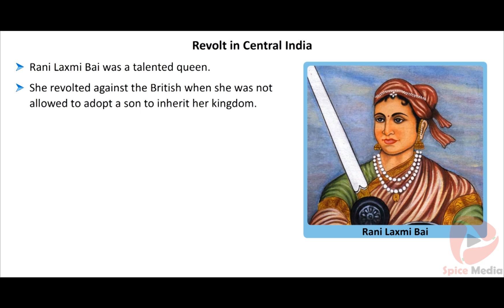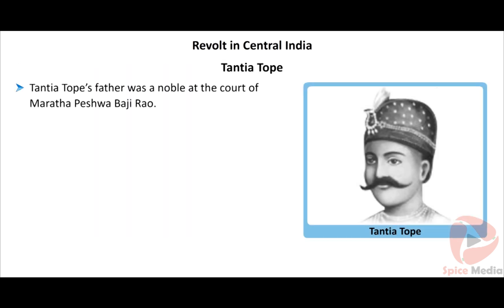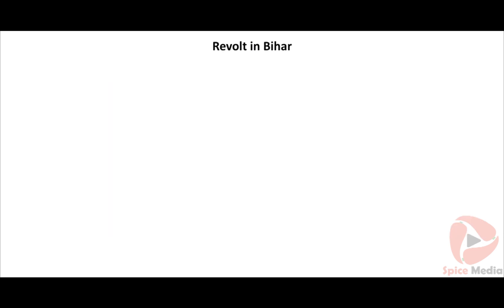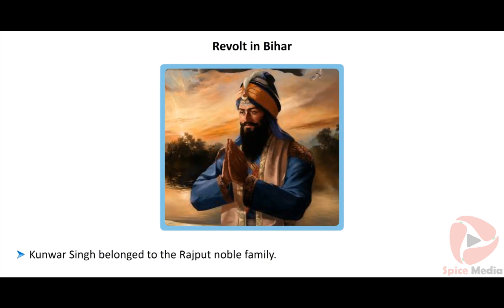In March 1858, the revolt in Lucknow was suppressed by Sir Colin Campbell. Rani Lakshmi Bai was a talented queen who revolted against the British when she was not allowed to adopt a son to inherit her kingdom after her husband's death in 1854. In Jansi, Rani Lakshmi Bai was proclaimed as ruler, sent troops to the battlefield, and joined hands with the Maulwi and Nana Sahib in the 1857 revolt against the British.